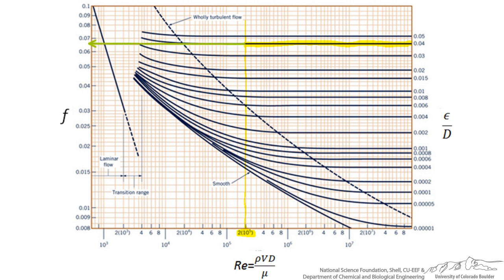You can see we are somewhere between 0.06 and 0.07, a little on the higher side. So we would estimate that our frictional factor is 0.066.